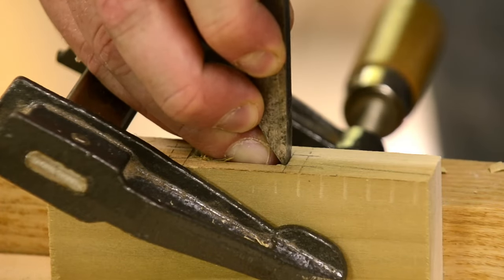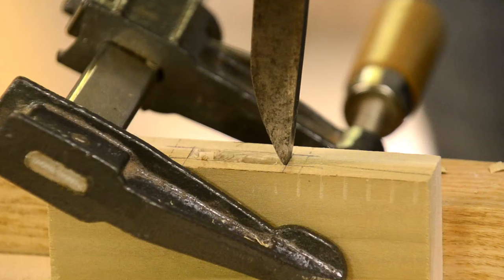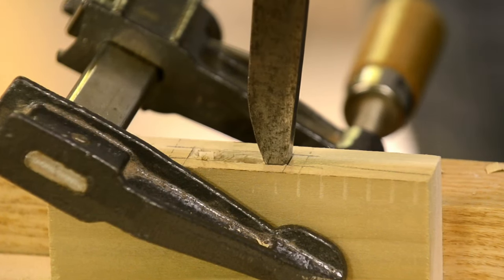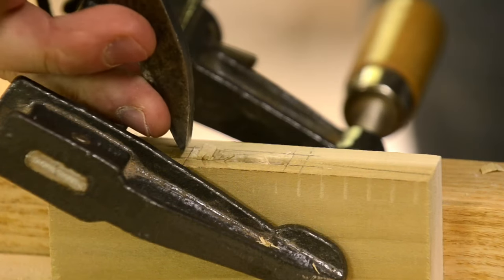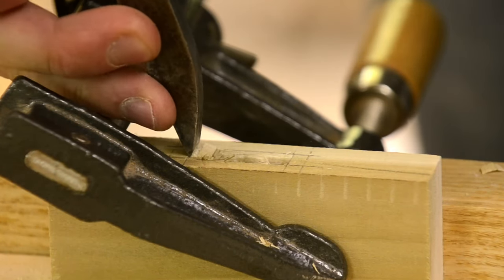So now you can stick the actual mortise chisel right on the edge. Now there's not too much pressure in there and go ahead and hit it straight down so you'll have a nice vertical wall there. And do the same thing to the other at the other end of the wall.